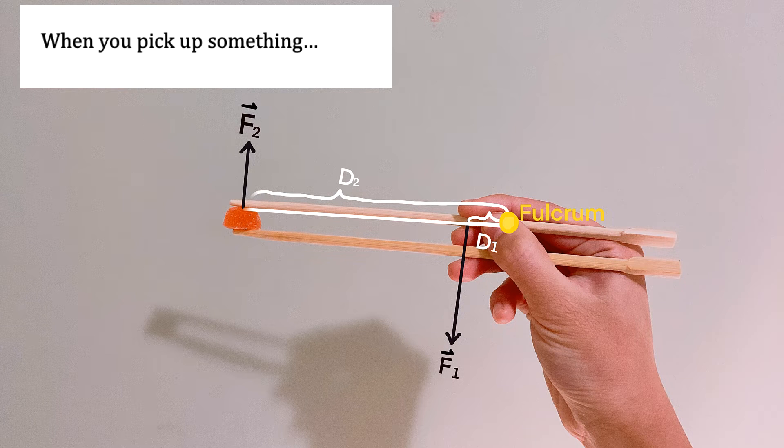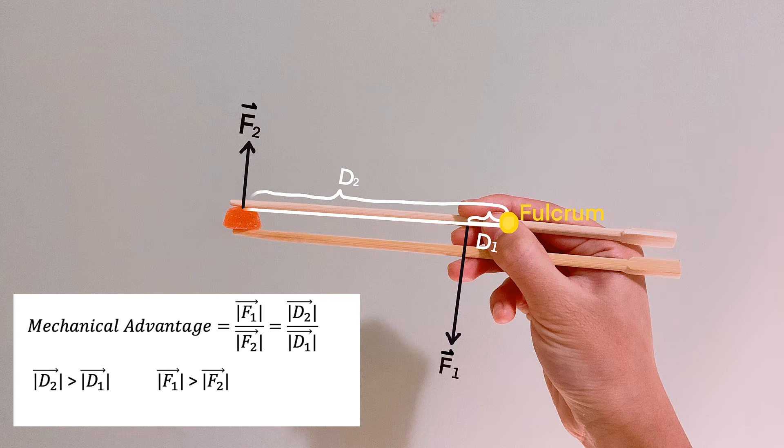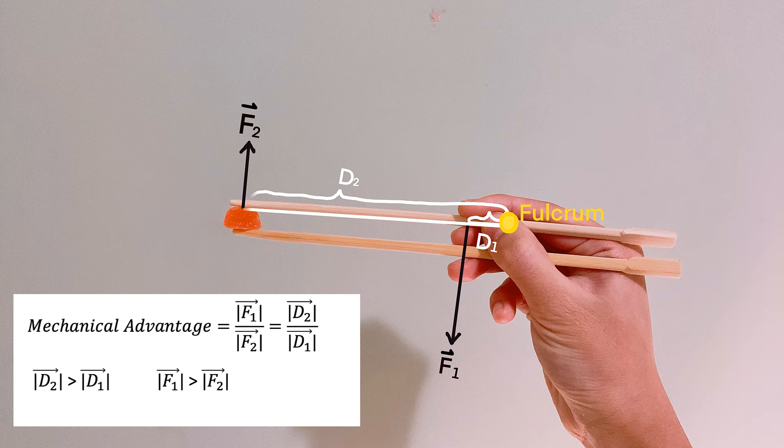In the lever system, the mechanical advantage is f1 over f2 equals d2 over d1. This ratio shows that the shorter distance from the force to the fulcrum, the more force you need to apply. We can see that d2 is greater than d1, so f1 is greater than f2.